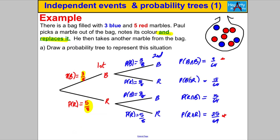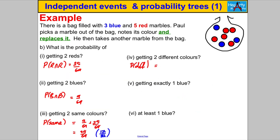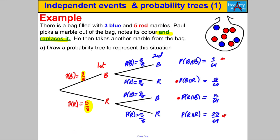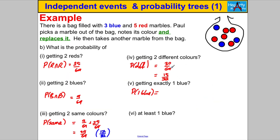Then it says: what's the probability of getting two different colours? It is the blue-then-red and red-then-blue branches combined: 15 out of 64 plus 15 out of 64, which is 30 out of 64, simplifying to 15 out of 32. What's the probability of getting exactly one blue? Here you got two blues — that's no good. Here you got one blue, here you got one blue, and here you got none. So it's those two added again: 30 out of 64, simplifying to 15 out of 32.